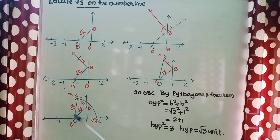So take that distance by using a compass. It is root 3 unit and mark to the number line by drawing an arc. Then we can mark or locate root 3 on the number line.